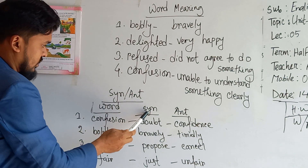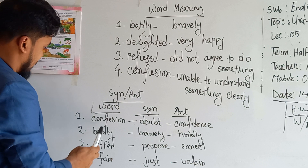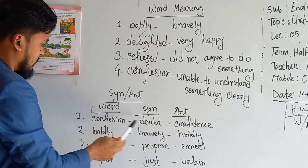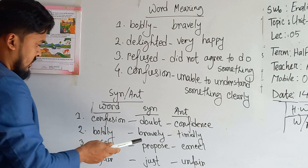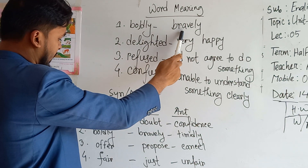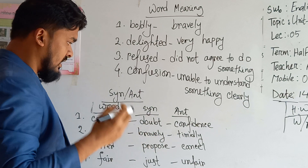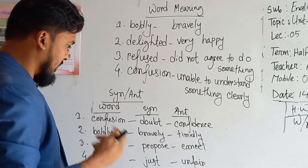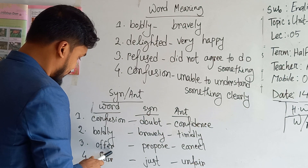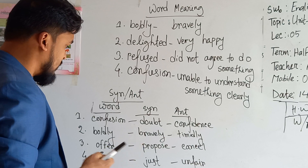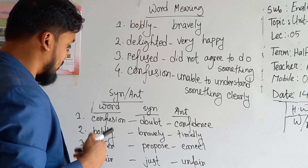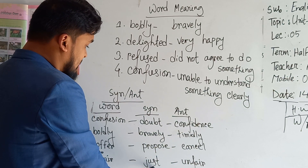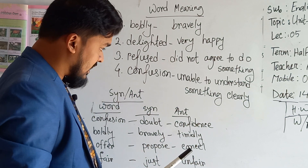Now synonyms and antonyms for four words. Number one: 'confusion' — synonym: doubt; antonym: confidence. Number two: 'boldly' — synonym: bravely; antonym: timidly. Number three: 'offer' means to propose something to somebody — antonym: cancel. Number four: 'fear' — synonym: just; antonym: unfair.